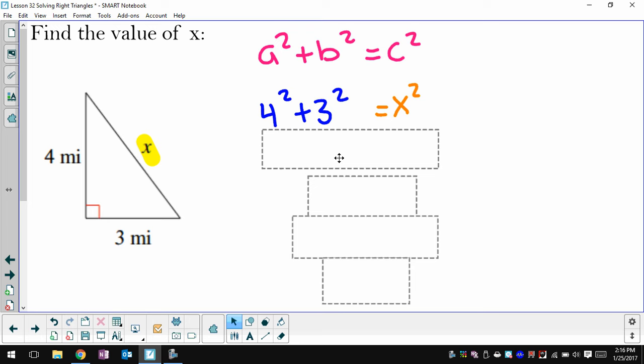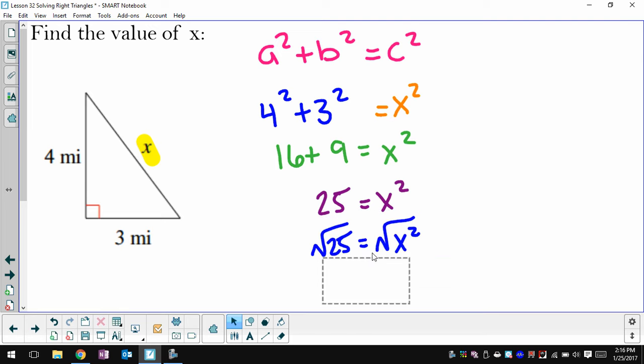I remember earlier in the year, a month or so ago, we did them in numerical order, and you can always do that. We'll simplify the left side. And then we're going to take the square root of both sides to get x to be 5.